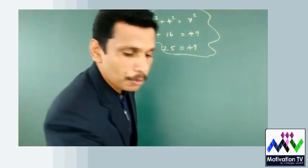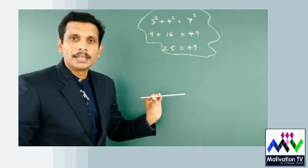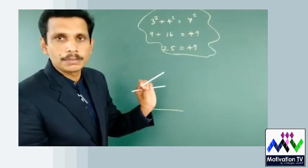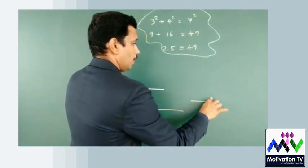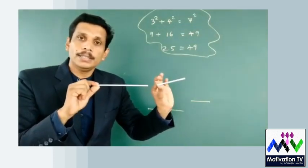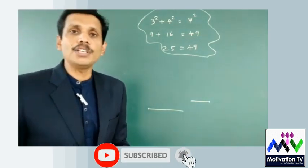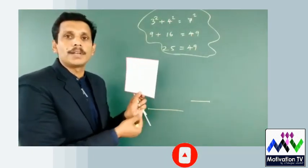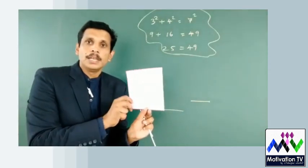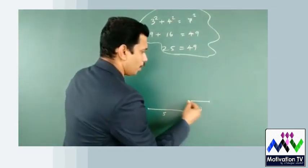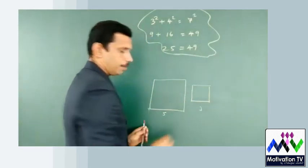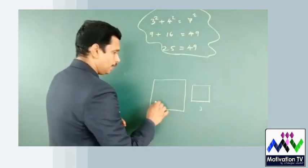Suppose it's a line of length 5 units and it's a line of length 3 units. Here we have a line of length 5 units and a line of length 3 units.